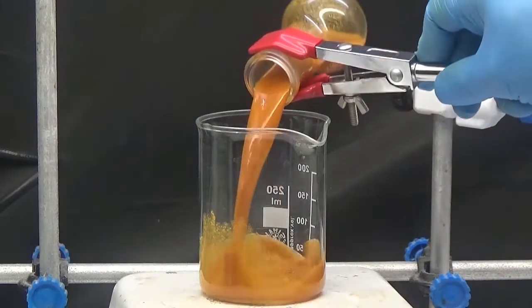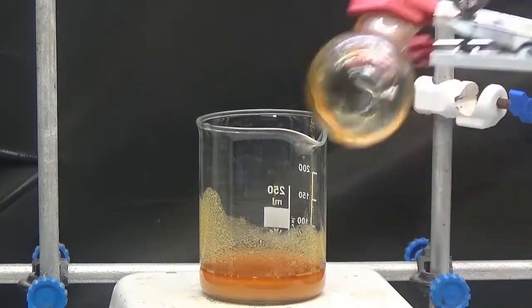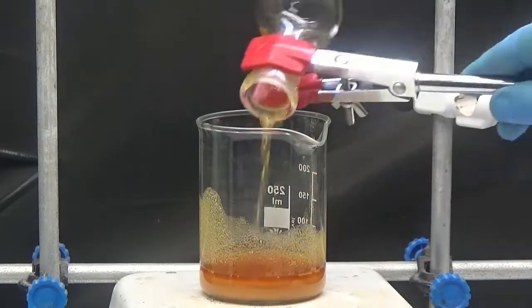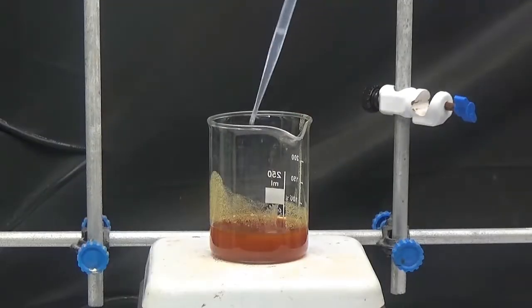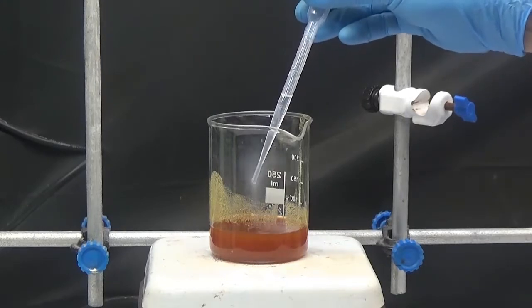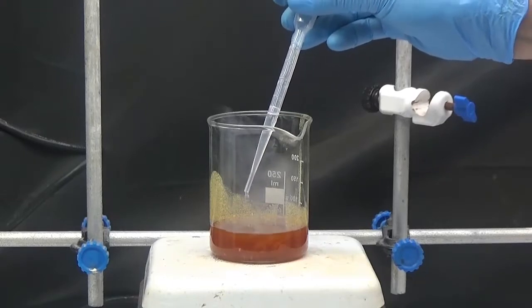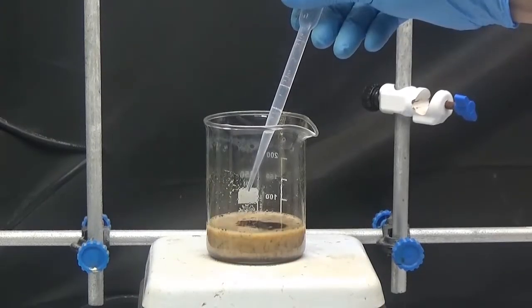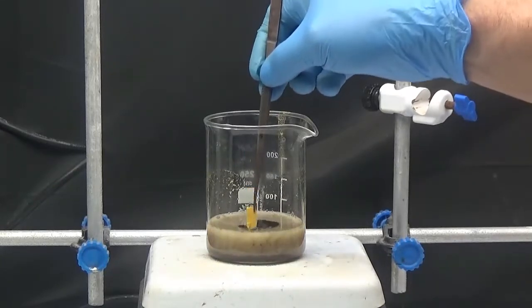Transfer into a 250 milliliter beaker and wash the flask three times with five milliliters of water. Slowly add concentrated hydrochloric acid to pH 2. A white precipitate with black residue emerges.